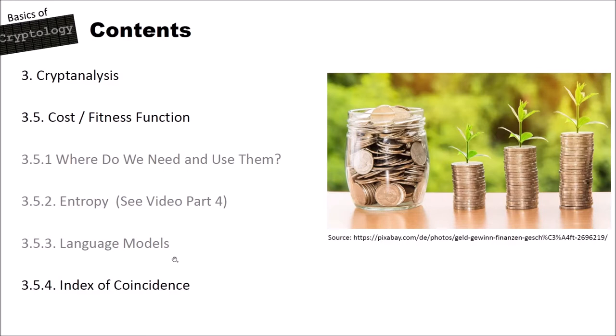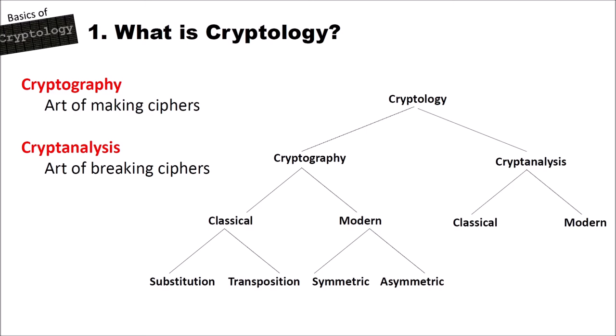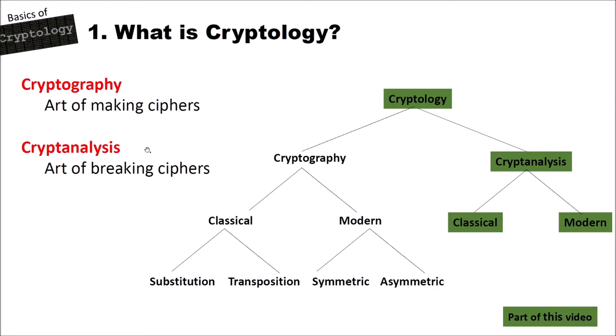As with all my videos on the Basis of Cryptology series, I first have a look at this slide. Cryptography is the art of making ciphers and cryptanalysis is the art of breaking ciphers. In this video we have a look at cryptanalysis — classical and modern cryptanalysis — since the index of coincidence can be used for classical ciphers or with modern cryptographic algorithms like heuristics, like hill climbing, for instance.